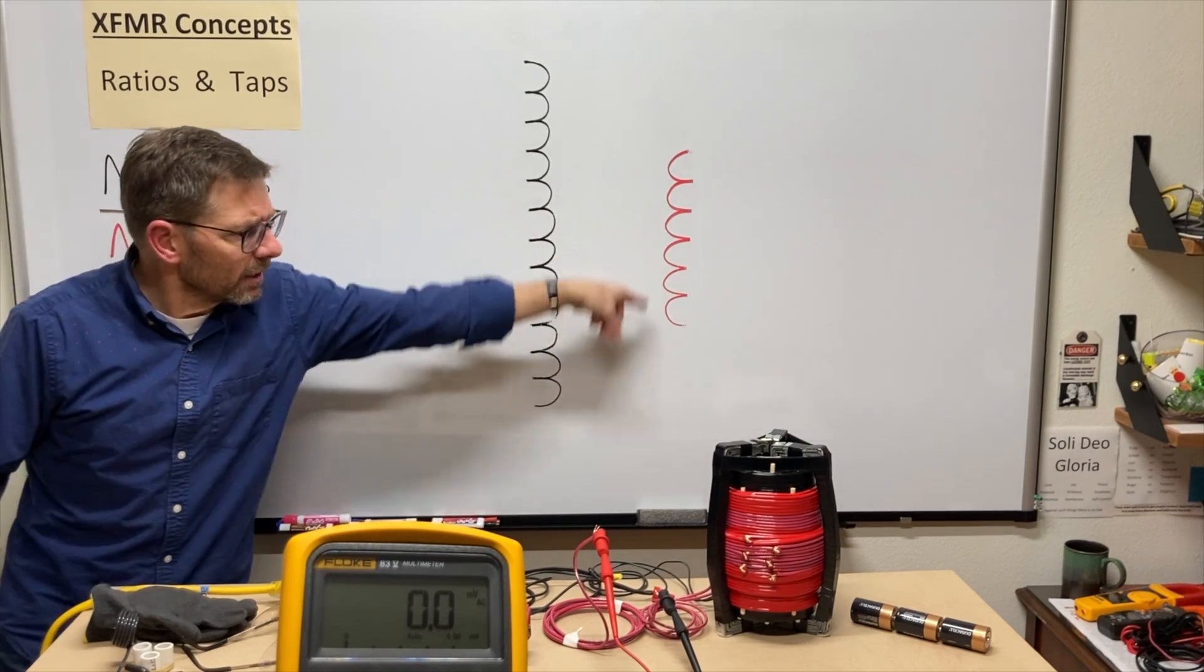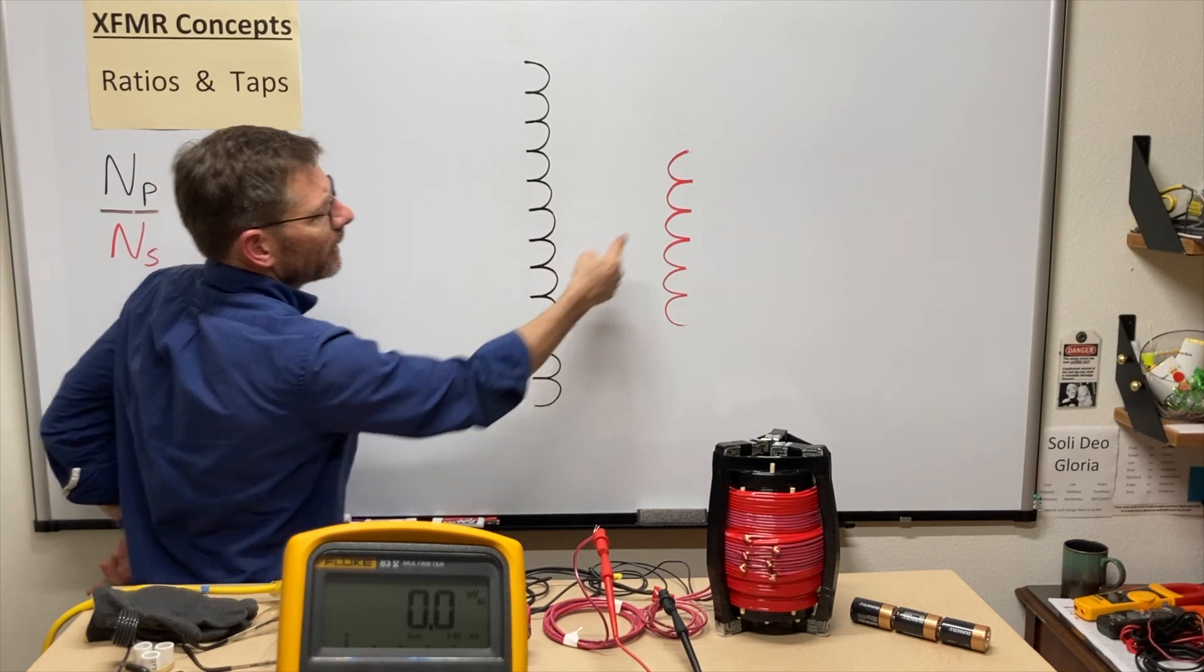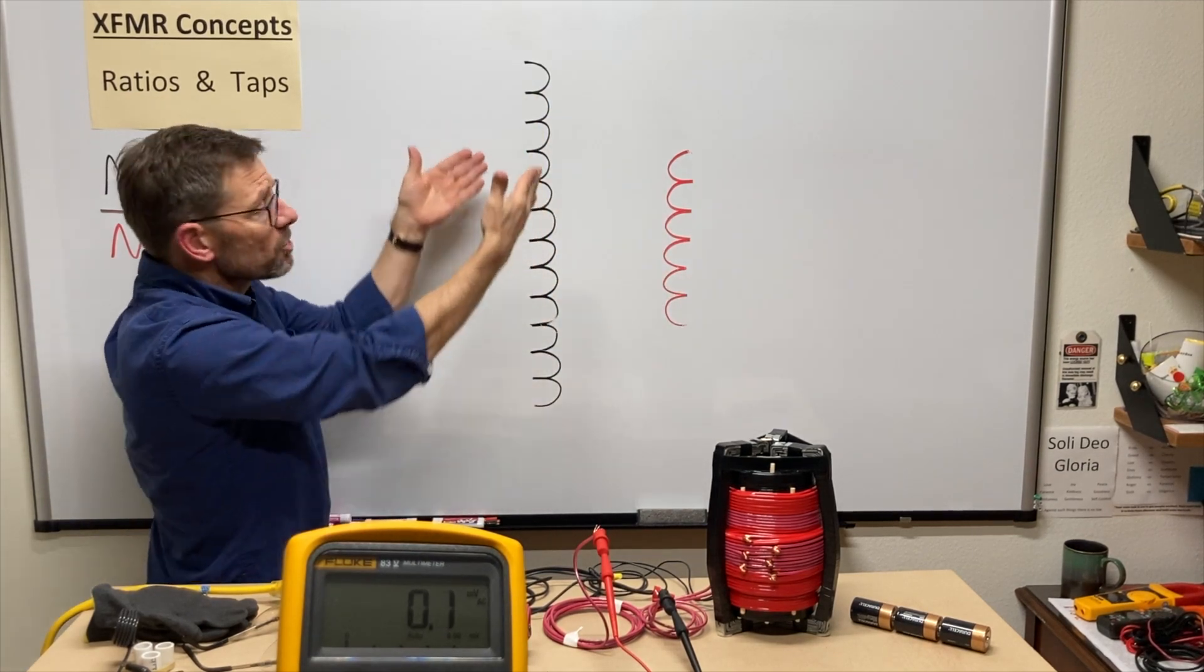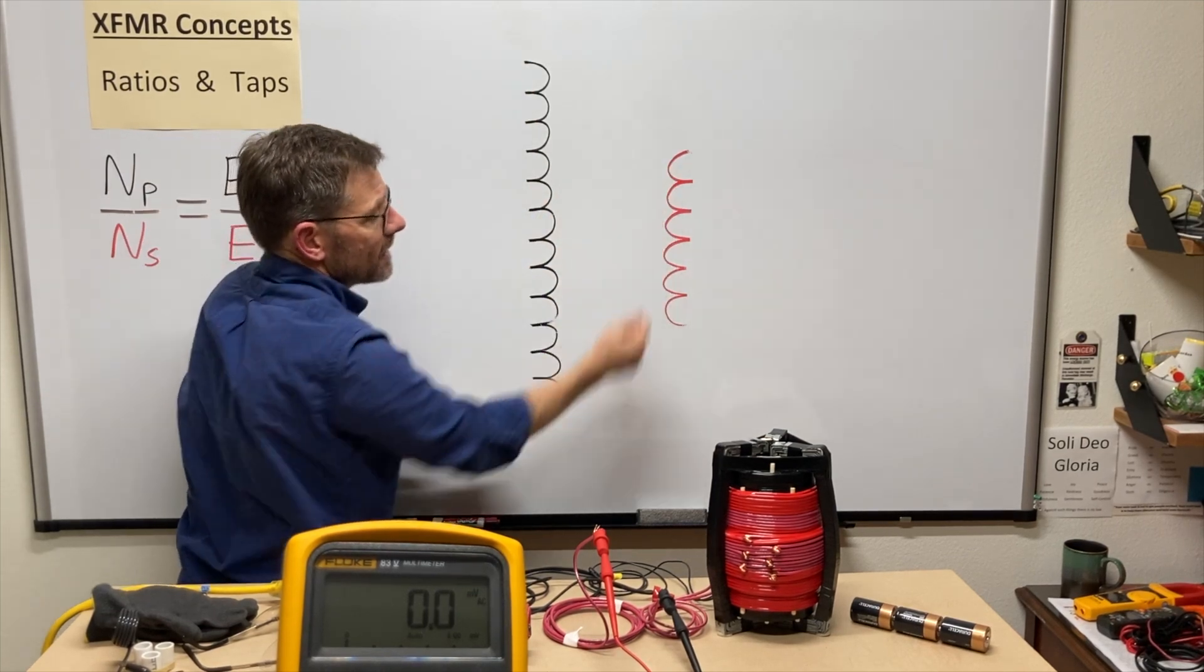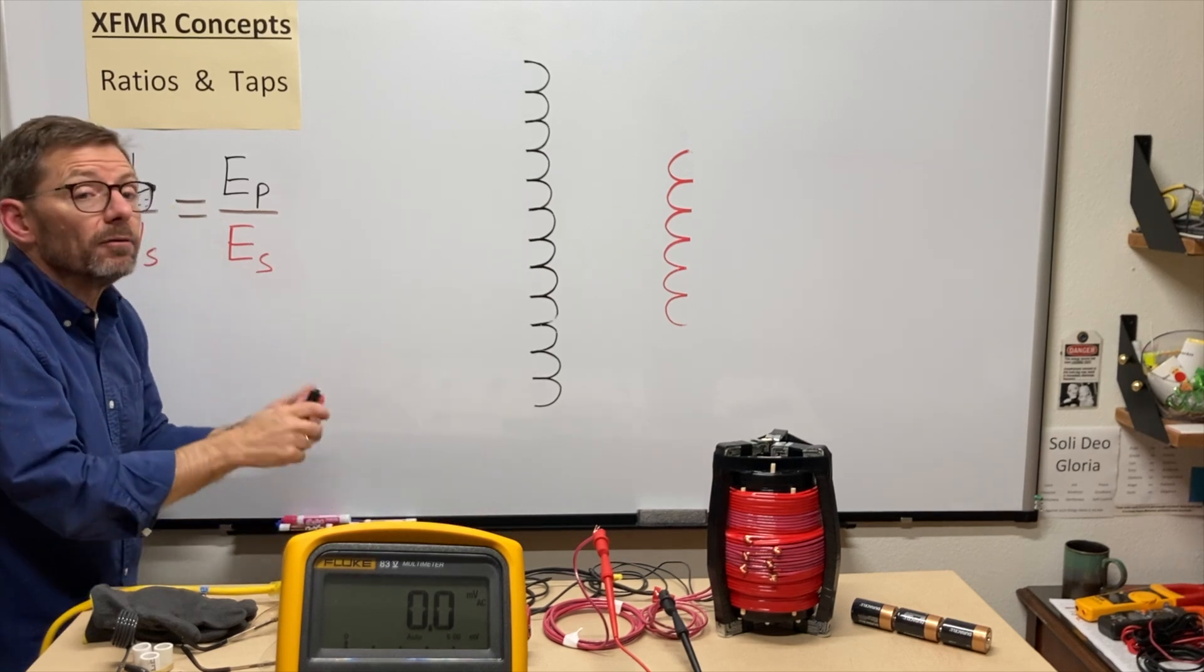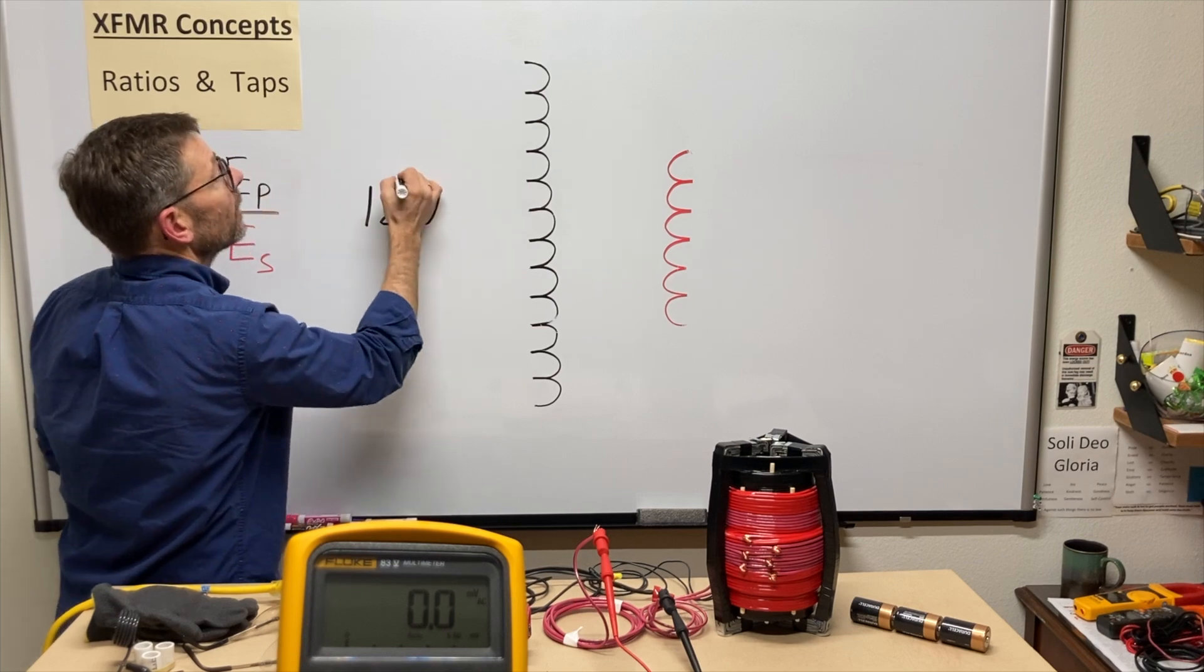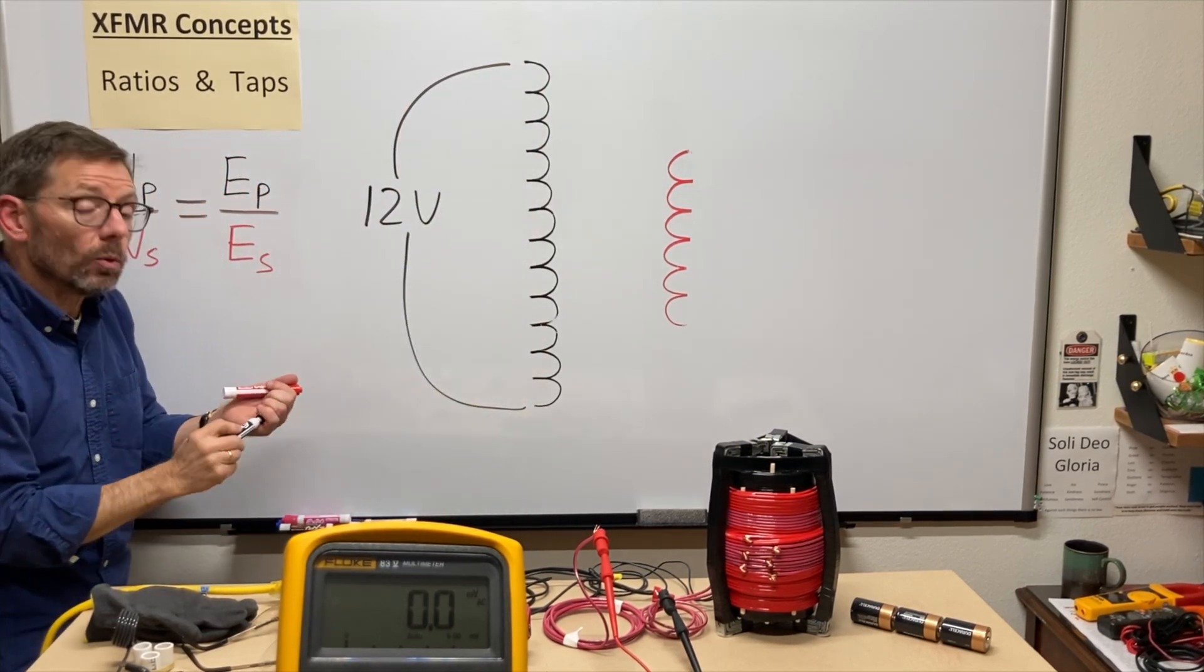Here I have a couple of windings up here. Oftentimes when I draw transformers, I'll draw a squiggle here, squiggle here, put the ratio in the middle. So for this demonstration, I spelled it out. I said we've got 12 turns here and six here. So if I take 12 volts AC, alternating current, and put it across this primary winding, what happens?